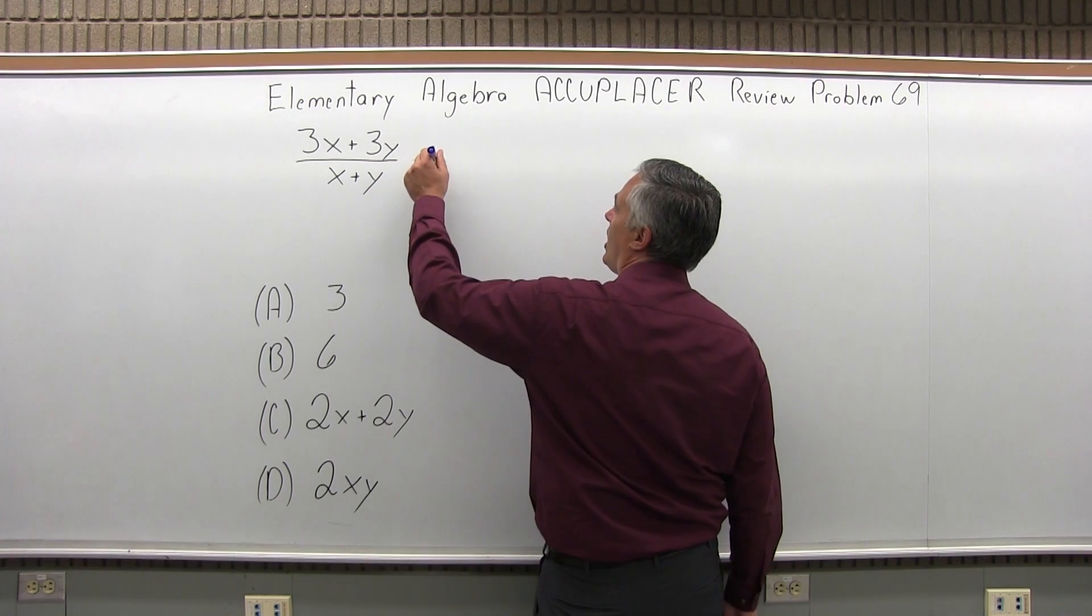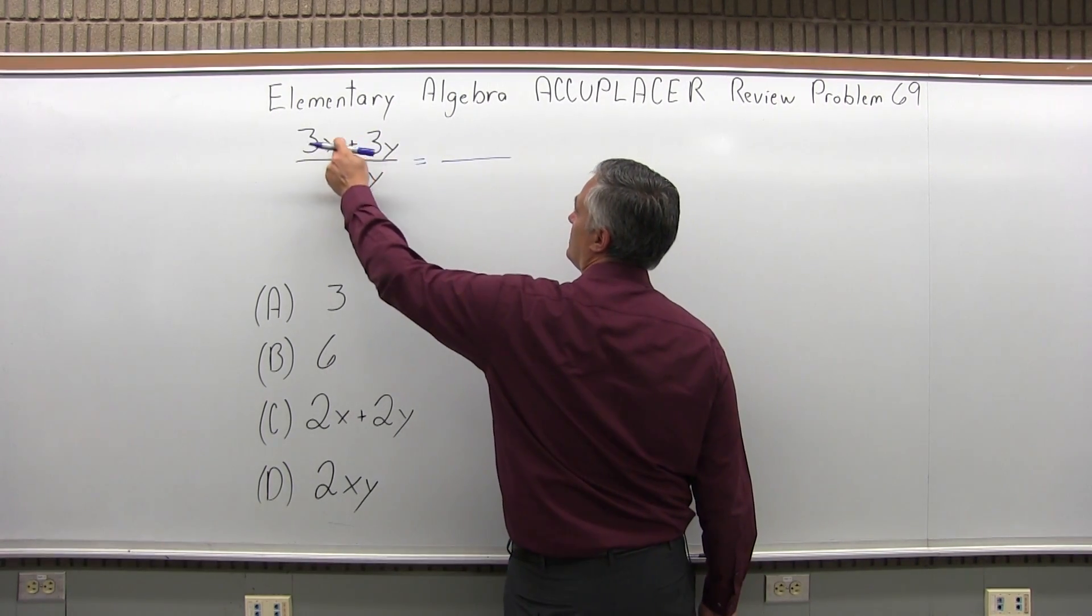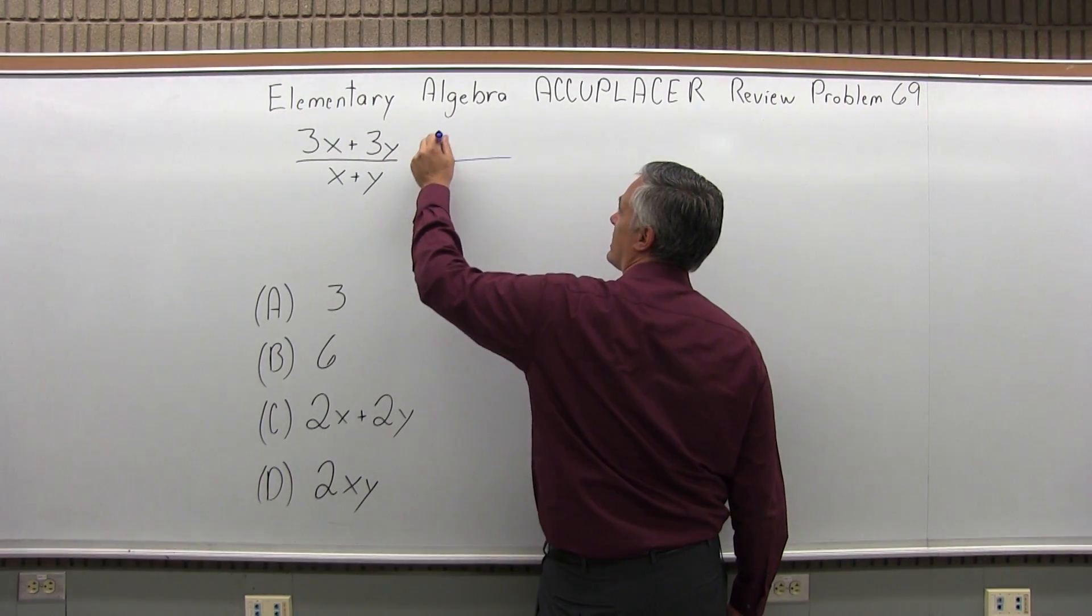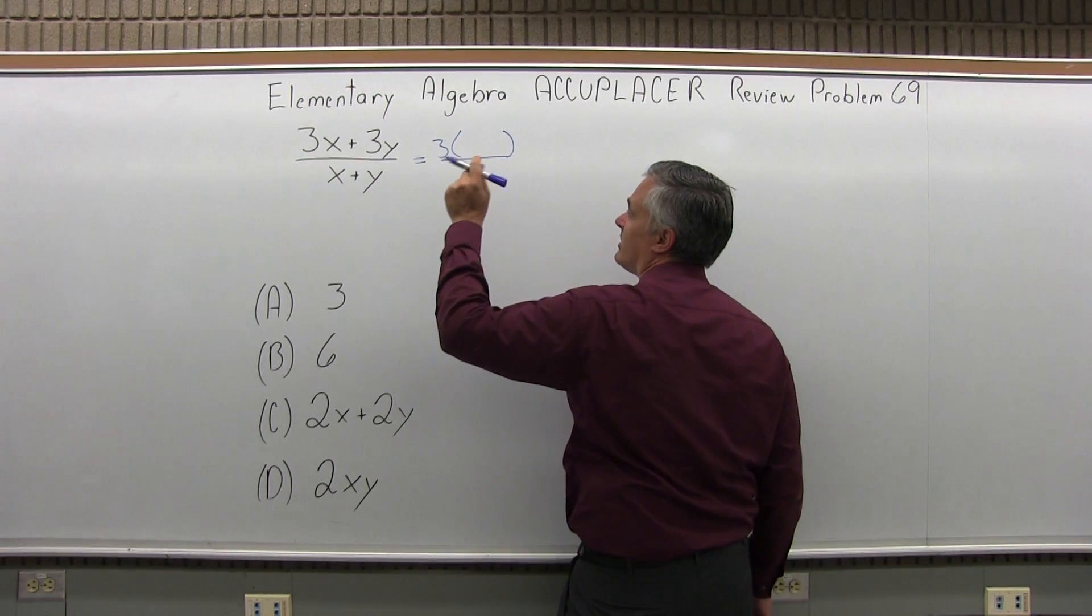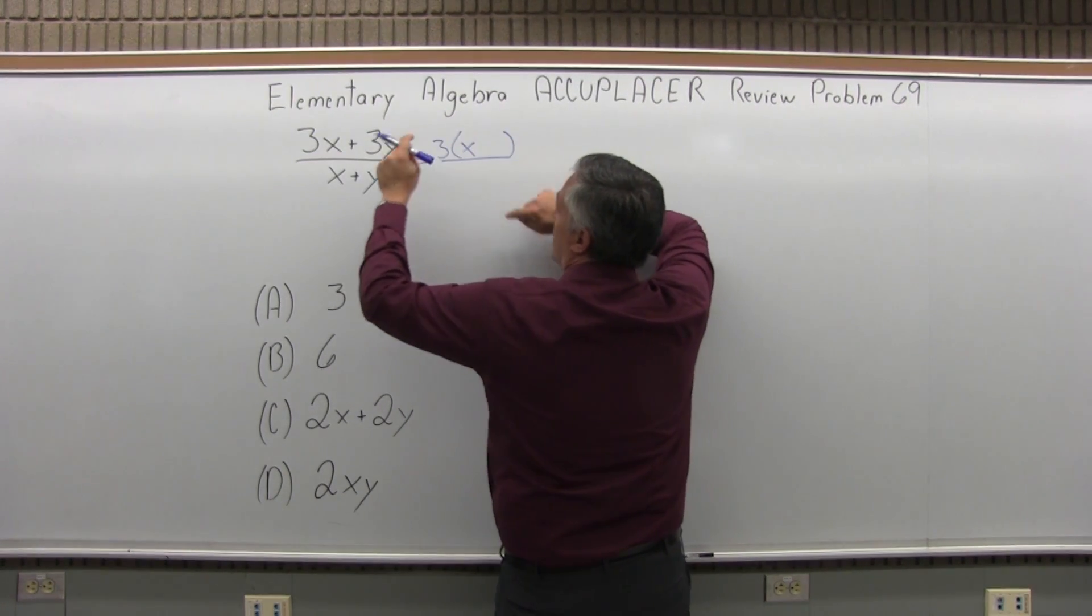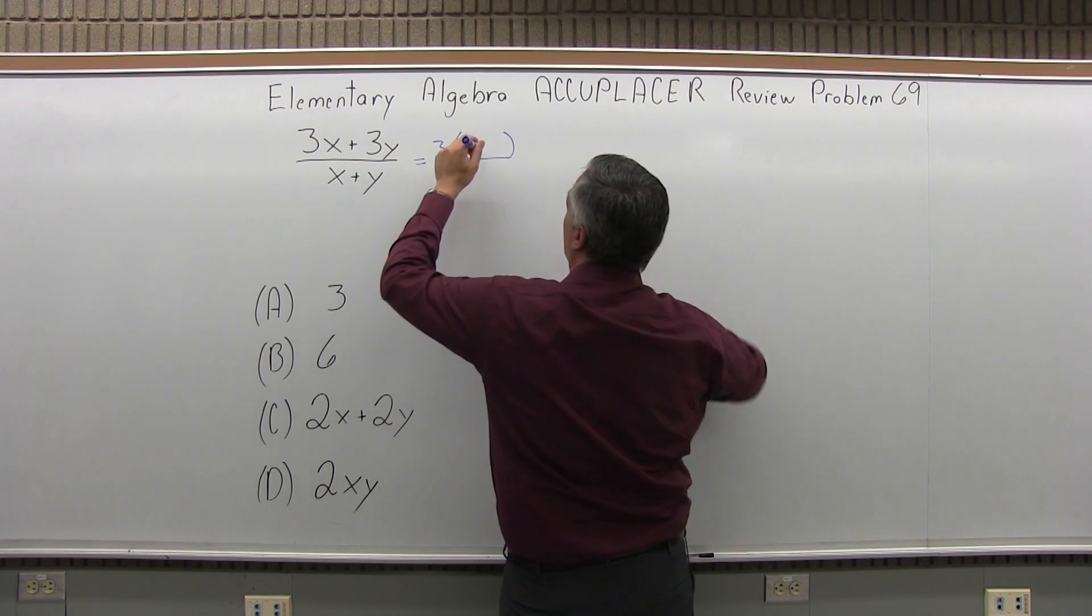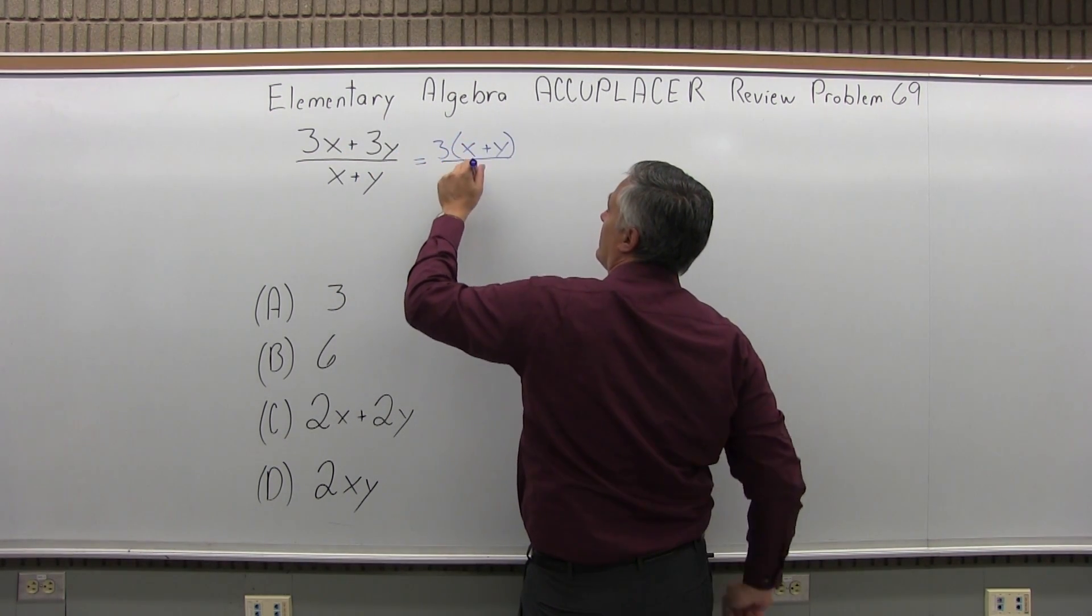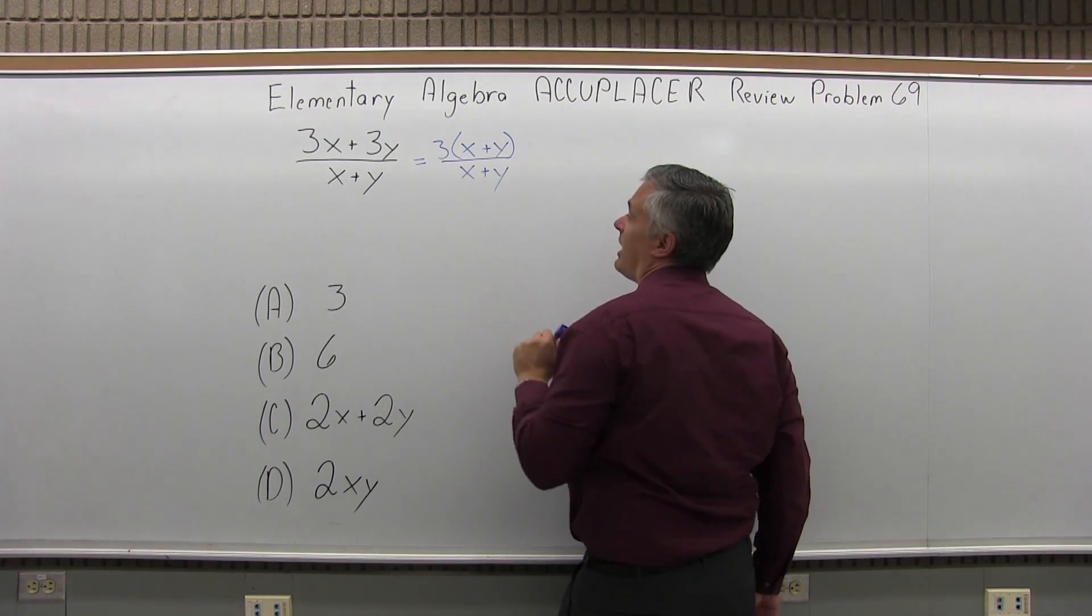In the top, if you notice, both pieces are something times 3. So I can put a 3 in front of some parentheses, and then 3 times x will make 3x, and 3 times positive y will make positive 3y, and the bottom has x plus y.